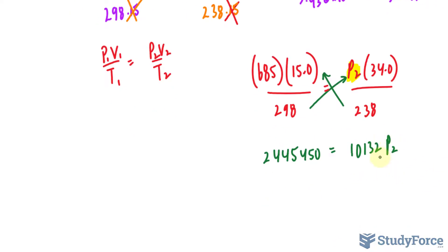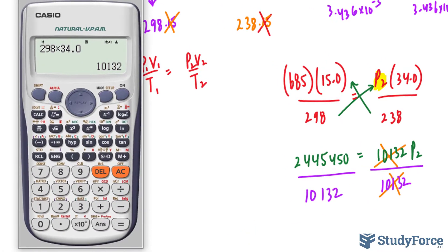We still need to isolate for P2. So we divide both sides now by that amount, this one right here, that cancels out. So 2,445,450 divided by 10,132 gives us 241.45.